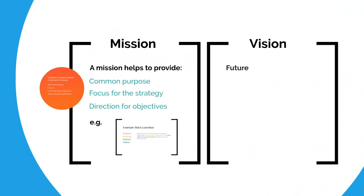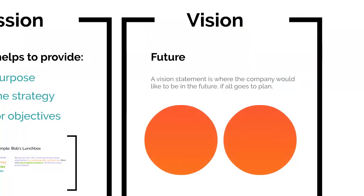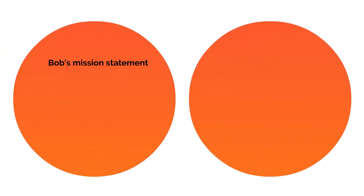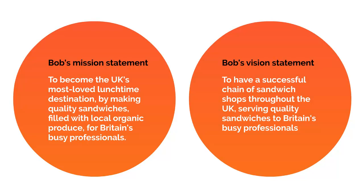How does a mission differ from a vision? Well, vision is about the kind of future you want to create — it's where the company would like to be in the future if all goes to plan. It's not a promise, not a contract, and not a road map — it's an idea of the future. Here's Bob's mission: to become the UK's most loved lunchtime destination by making quality sandwiches filled with local organic produce for Britain's busy professionals. His vision statement looks ahead: he's going to have a successful chain of sandwich shops throughout the UK serving quality sandwiches to Britain's busy professionals. So it's his vision of a future state.